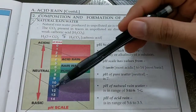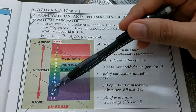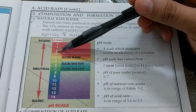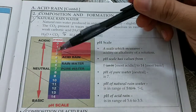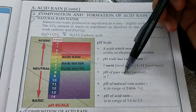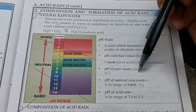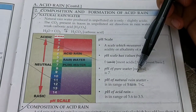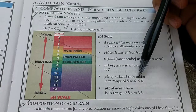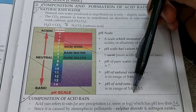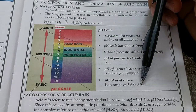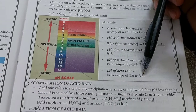The pH scale can be used to measure the acidity of a substance. The lower the pH, the more acidic it is. Pure water has a pH of 7, which is absolutely neutral. Above 7 it is alkaline or basic. Natural rain water is 5.6. Acid rain is below 5.6, down to 3.5, and below 3.5 that is very dangerous.